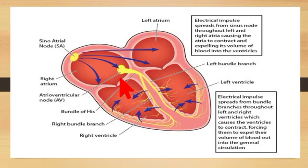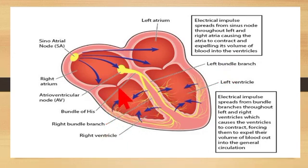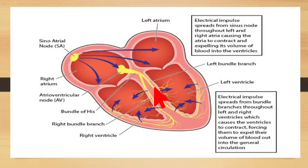From the atrioventricular node, the impulse spreads to another system of specialized fibers called the bundle of His. You can see here the right bundle branch and the left bundle branch. These right and left bundle branches, present between the ventricles, originate from the bundle of His, which is also located within the ventricles.